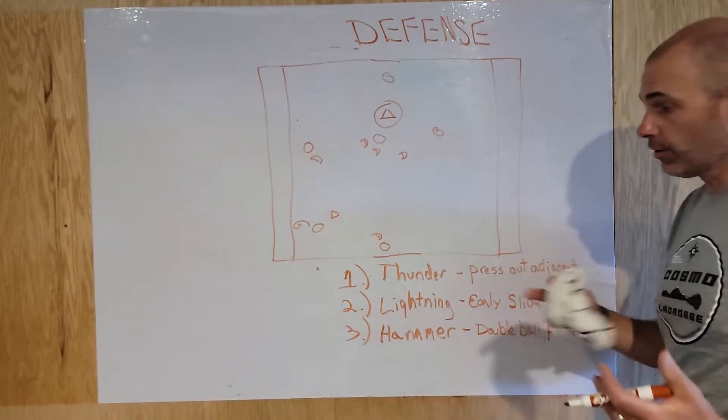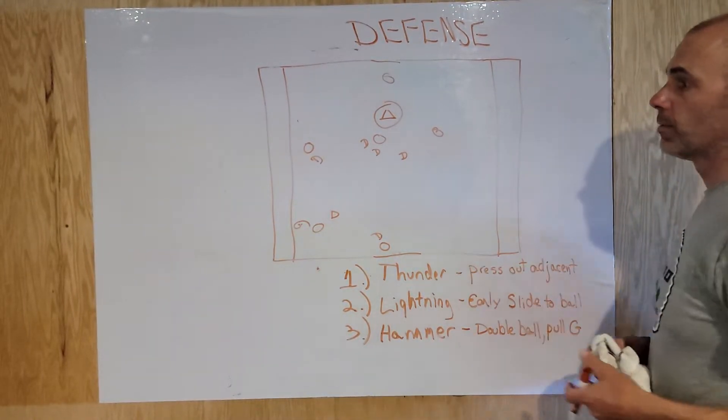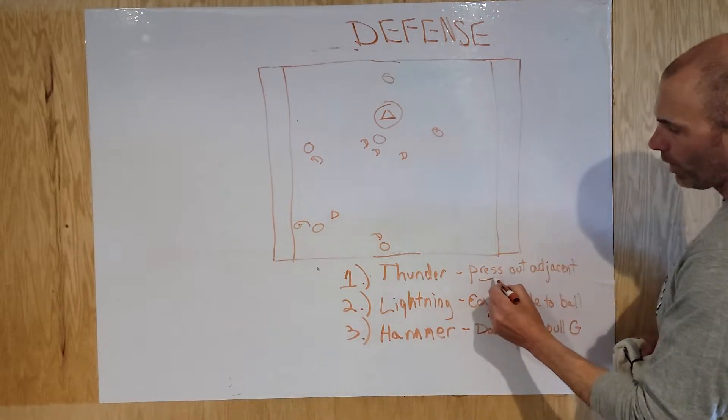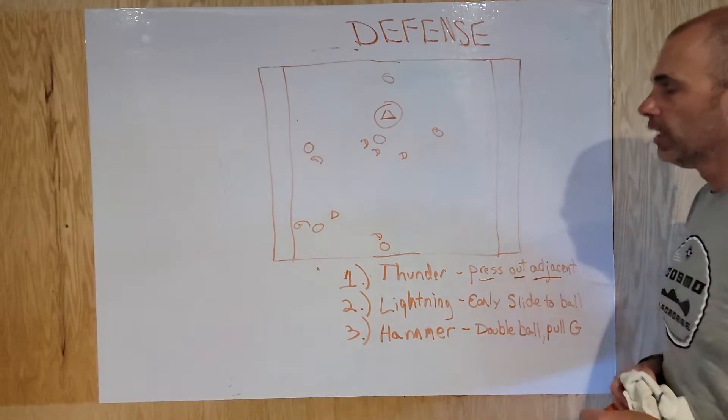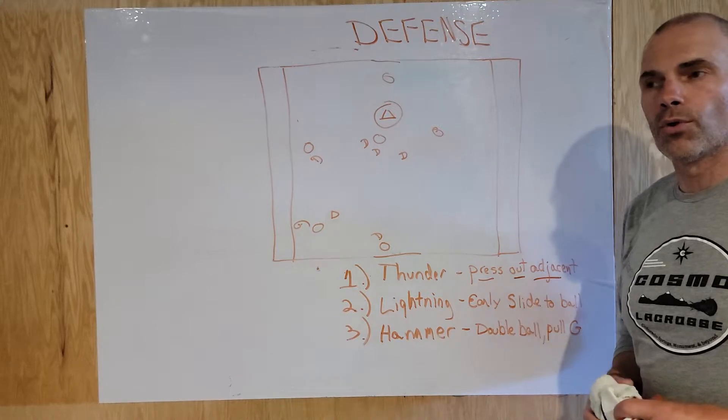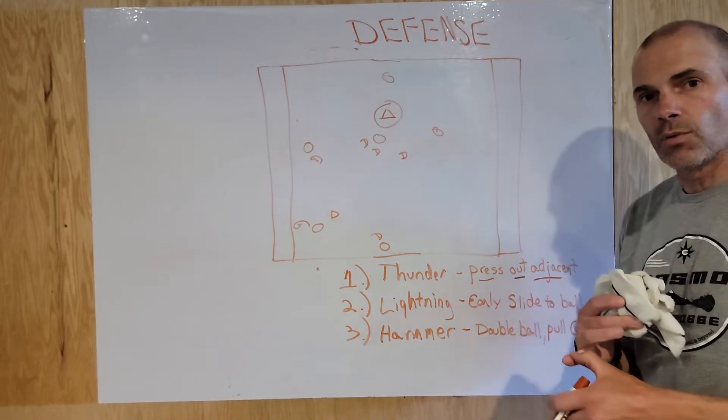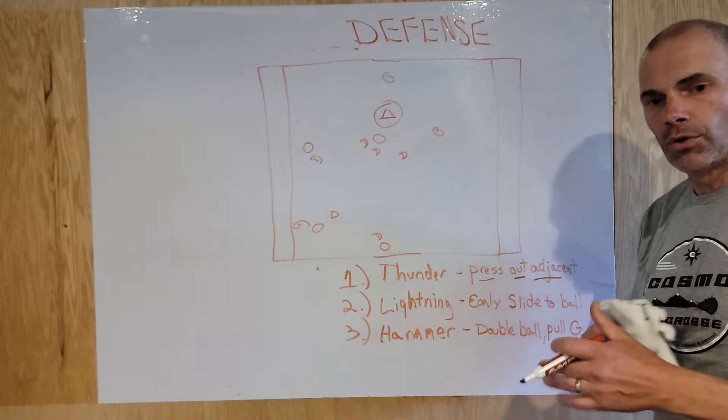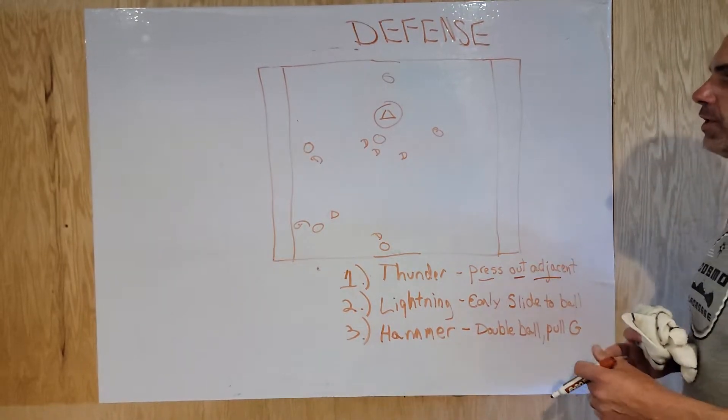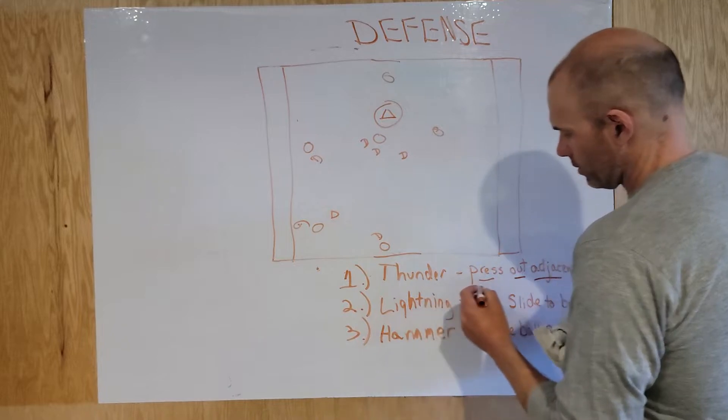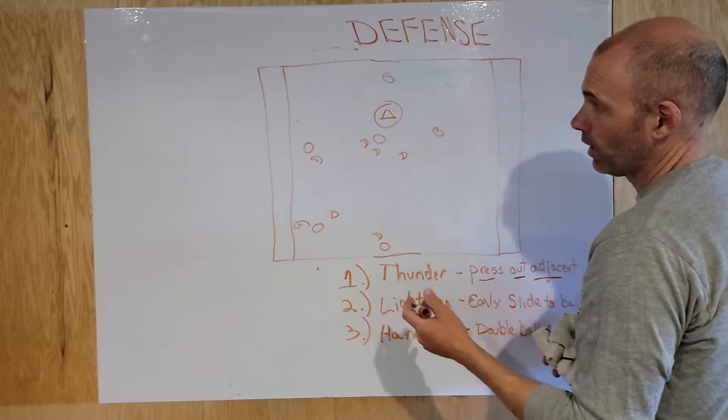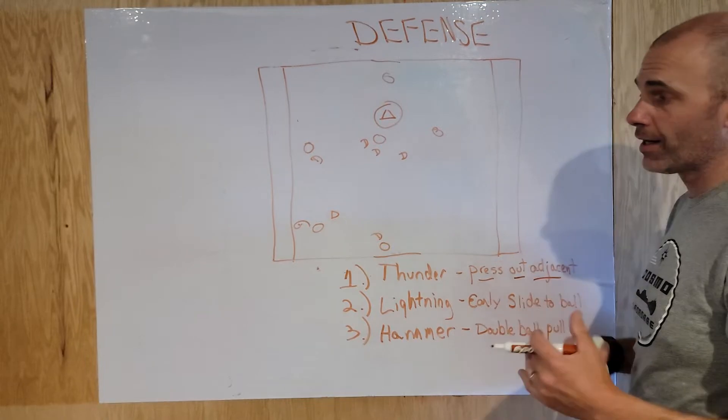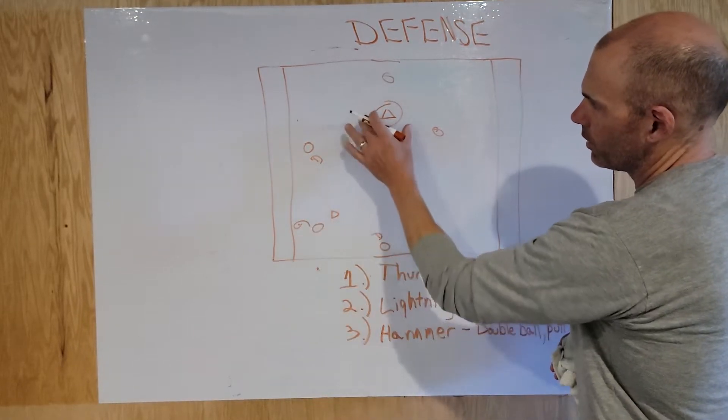First, thunder. Just like thunder and lightning. Thunder, like that comes from the sky. We're going to press out adjacent. Say we're getting down to the fourth quarter, we think there's a weak ball handler maybe we're facing, it's getting late, maybe we're down a goal or a couple goals. We're going to press out adjacent. What adjacent means is when you're next to the ball. You guys should all know that because we've gone over our lefts and rights on defense.